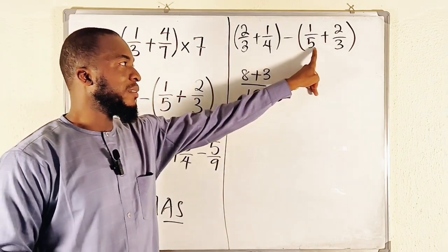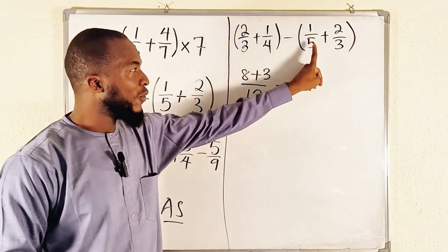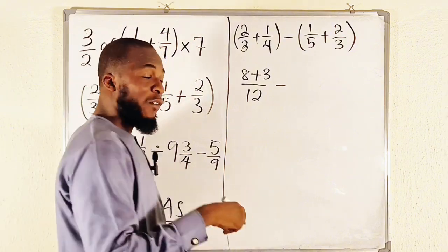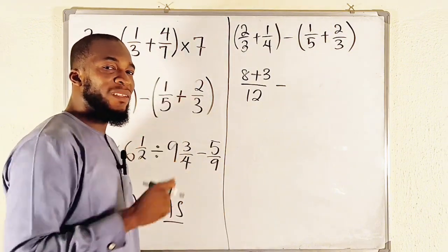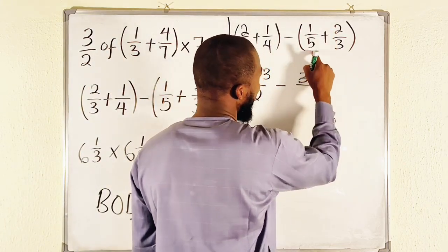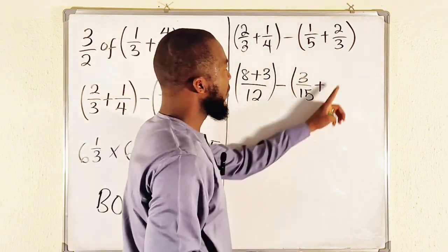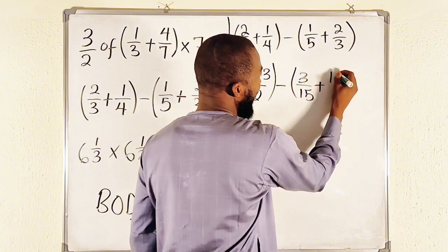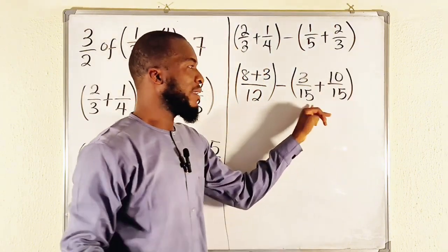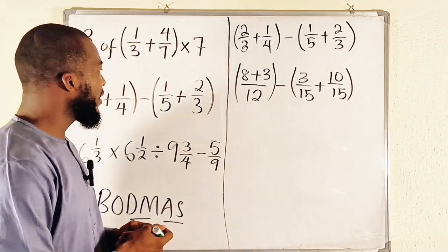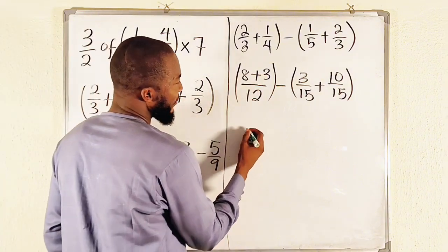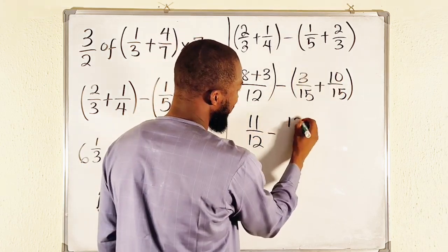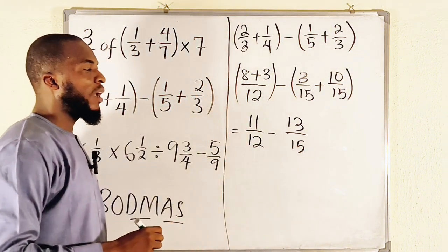Now let me show you another way. For the second bracket, the LCM of 5 and 3 is 15. To change 5 into 15 you multiply by 3, and for equivalent fractions you multiply the top by the same value: 3 times 1 is 3, and 3 times 5 is 15. For the other fraction, to change 3 into 15 you multiply by 5: 5 times 2 is 10, and 5 times 3 is 15. Now we have the same denominators. So the first bracket gives 8 plus 3 equals 11 over 12, minus the second bracket which gives 3 plus 10 equals 13 over 15.